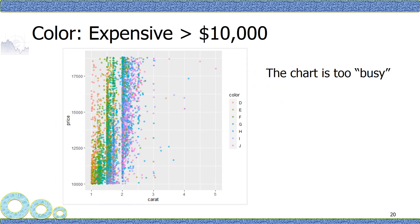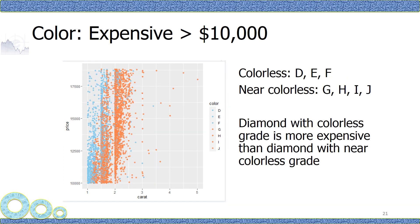I select a different subset. All the diamonds sold for more than $10,000. This is the color assignment automatically done by ggplot. Again, I do the manual color assignment. Now you can see the blue ones represent the color grade that is colorless, and they are more expensive than the orange ones.